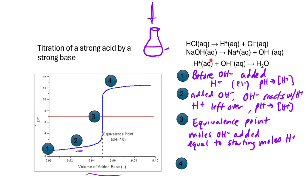The definition of the equivalence point is that the moles of OH- added equals the starting moles of H+. That is, we've completely reacted all of the H+ with OH- that we've added. This reaction occurs to completion, and at the equivalence point we're left with water. The pH depends only on the autodissociation of water, which means the pH at 25°C equals 7. Only for the titration of a strong acid with a strong base — or strong base with strong acid — will the pH be 7 at the equivalence point.